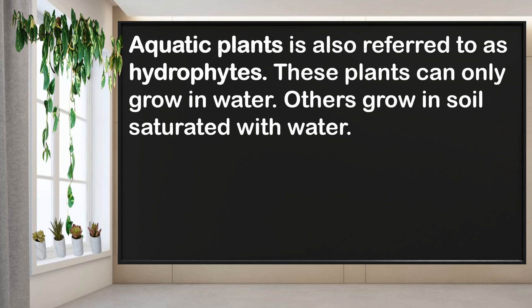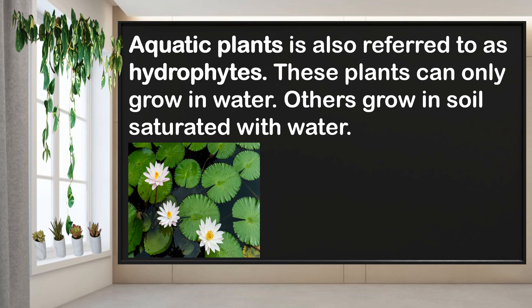Aquatic plants are also referred to as hydrophytes. When we say hydro, it means water. Aquatic plants can only grow in water or even in marsh or soil saturated with water.